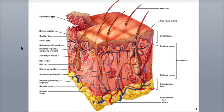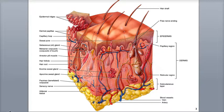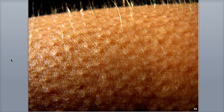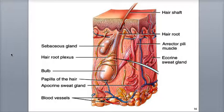Also associated with the hair follicle are sebaceous or oil glands and smooth muscle bundles called erector pili. The erector pili muscles contract under physiological or emotional stress, which pulls the hair shafts erect, causing what we call goose bumps or goose pimples. A bundle of neurons called the hair root plexus is located at the base of the hair follicle at the bulb, making them sensitive to touch or movement.